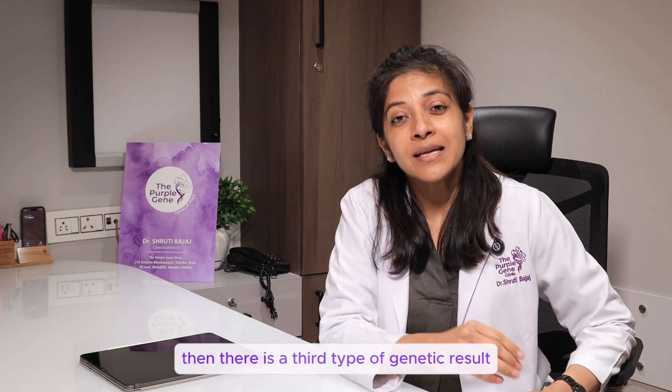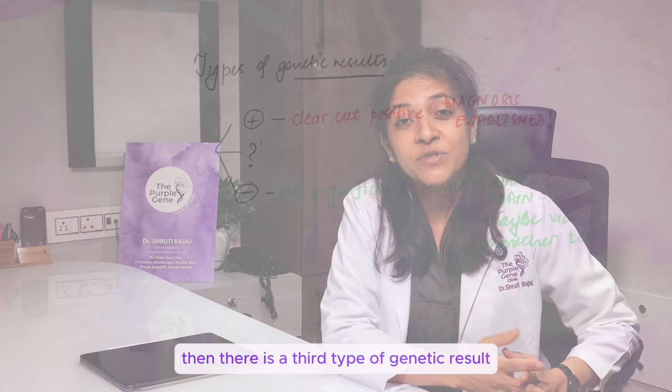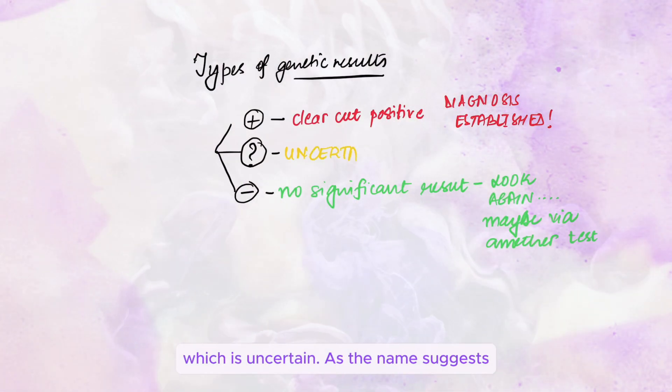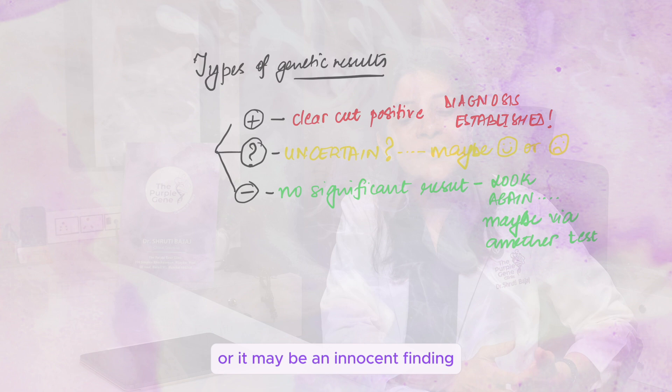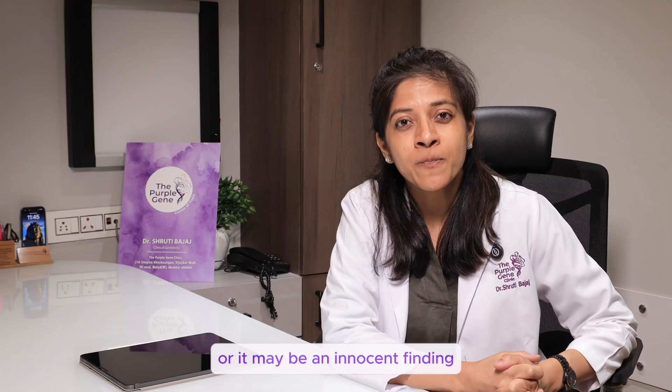Then there is a third type of genetic result, which is uncertain. As the name suggests, it could be either causative or it may be an innocent finding.